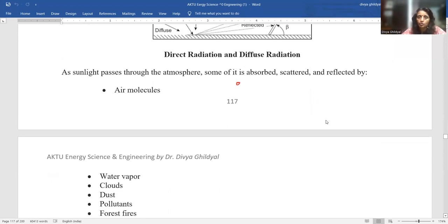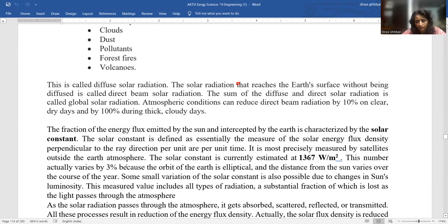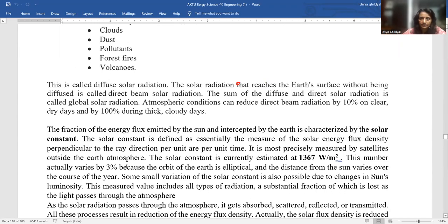As sunlight passes through the atmosphere, some of it is absorbed, some is scattered, some is reflected. These phenomena happen because of air molecules, clouds, dust, pollutants, forest fires, volcanoes, etc. So, the earth's surface radiation without being diffused, the ones that reach direct, are known as direct radiations and the ones which get diffused are known as diffused radiations.